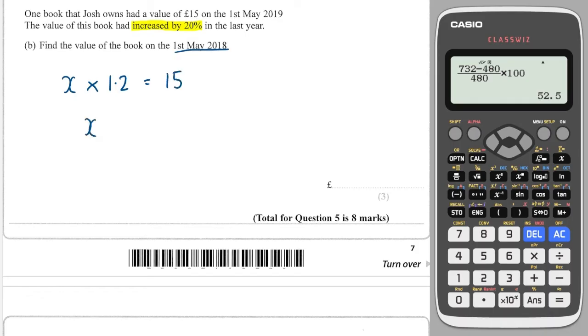So to reverse the process, some people think you just reduce by 20%, but no you don't. You divide by that 20% increase. So I do 15 divided by 1.2 and I get £12.50.